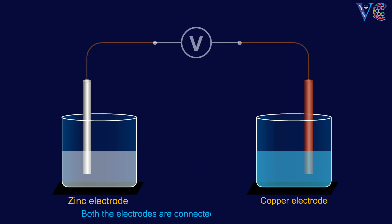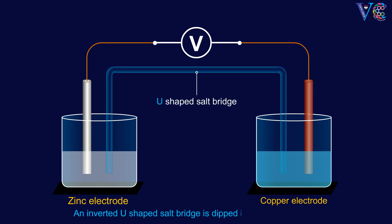Both the electrodes are connected through electrical circuit. An inverted U-shaped salt bridge is dipped into two electrodes. The salt bridge contains salts like sodium sulfate and potassium nitrate in agar-agar gel.